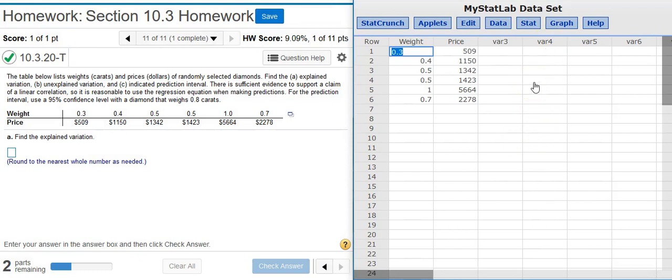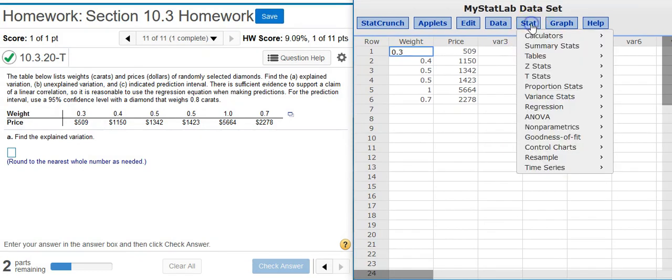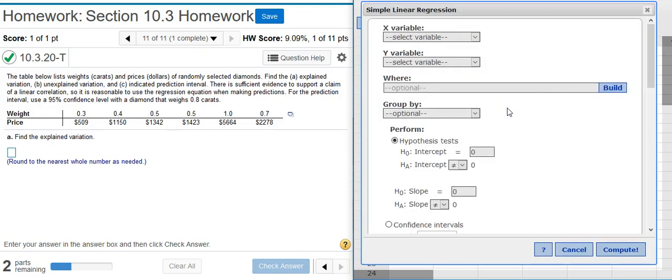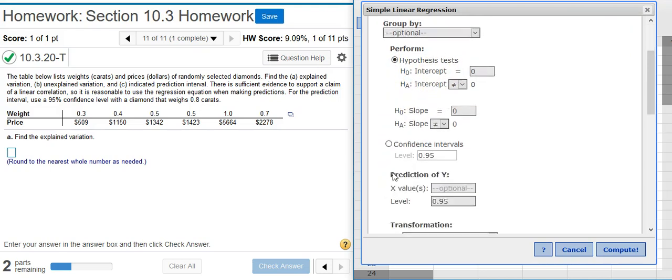Now, to get the linear regression analysis, I go to Stat, Regression, Simple Linear. In the Options window, I'm going to select my X and Y variables. Typically, the X variable is the variable that's mentioned first. The Y variable is the one that's mentioned next. The ANOVA table comes out of the Hypothesis Test, so I want to leave this radio button for Hypothesis Test selected.